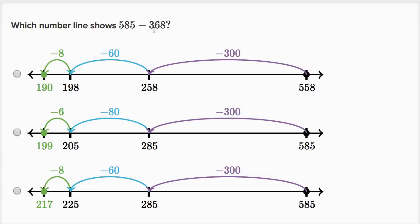We want to subtract 300s, six tens, and eight ones. In both of these, we subtract 300s, and then we want to subtract six tens, and then eight ones. That's this one over here.